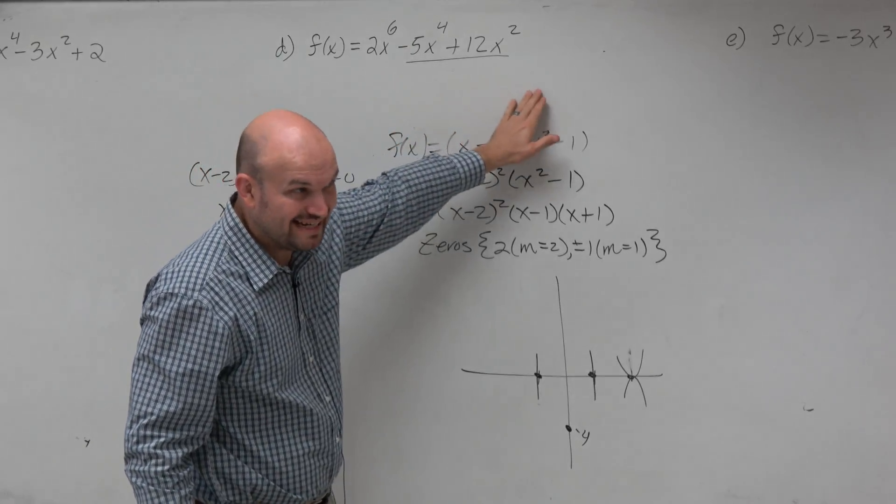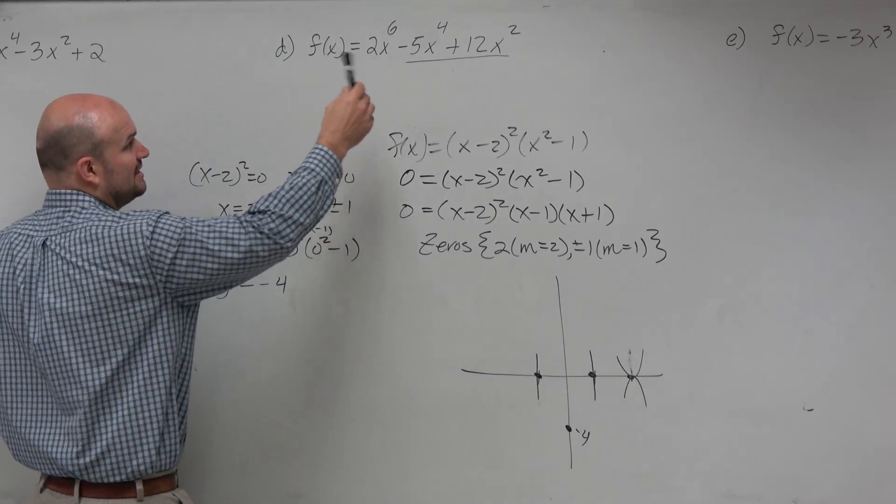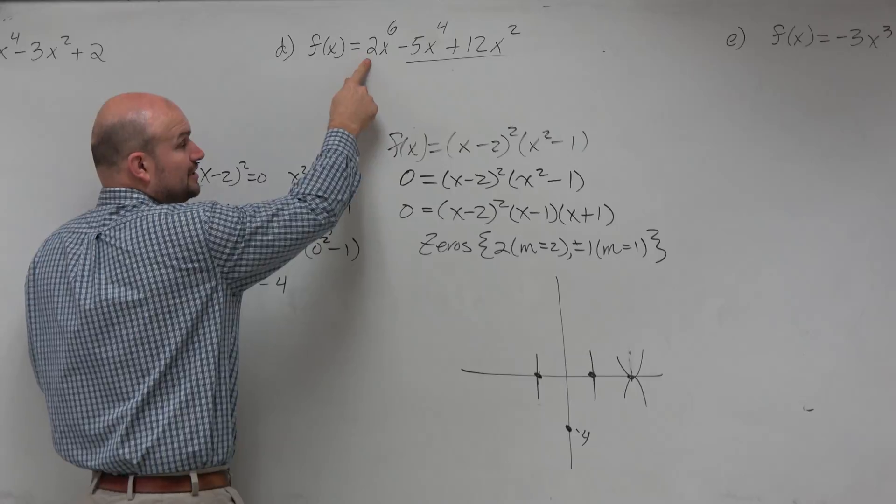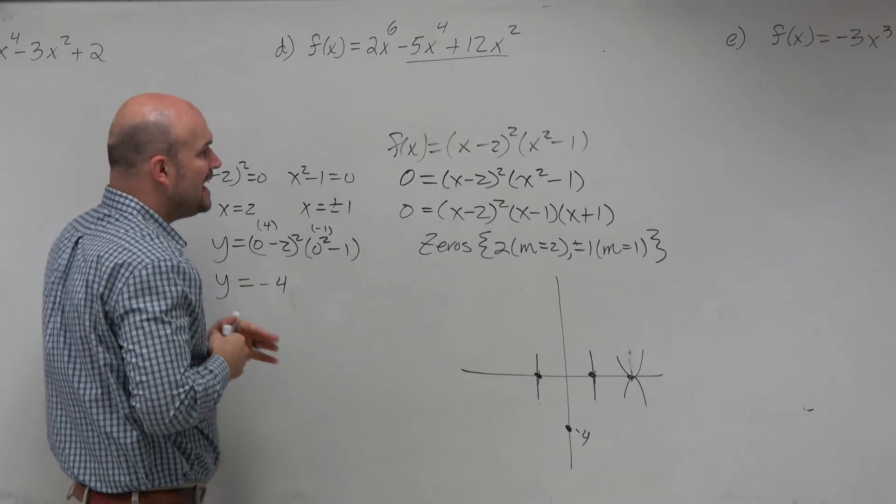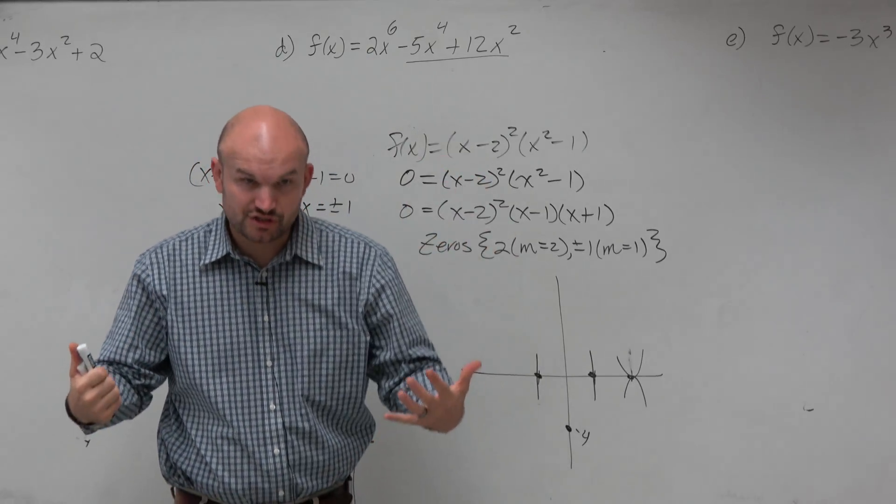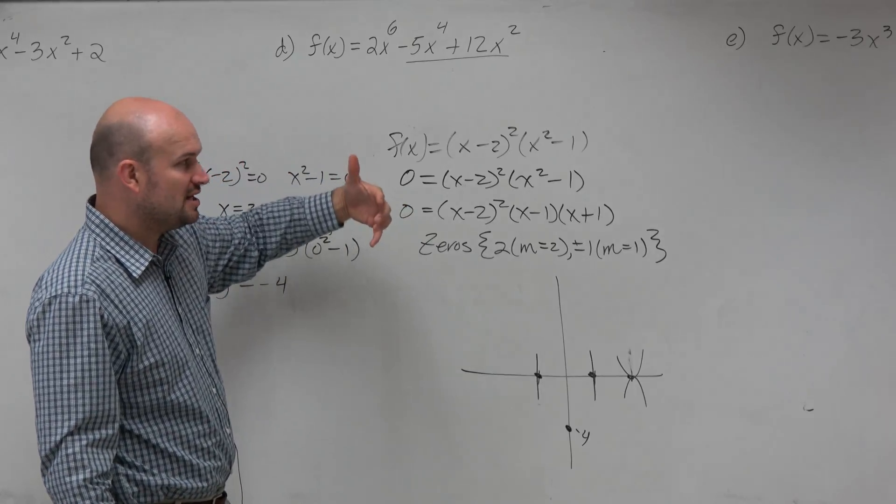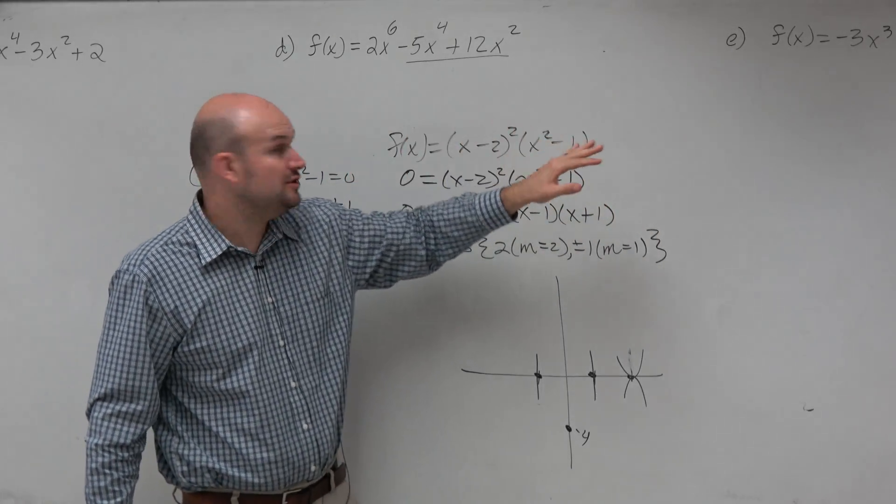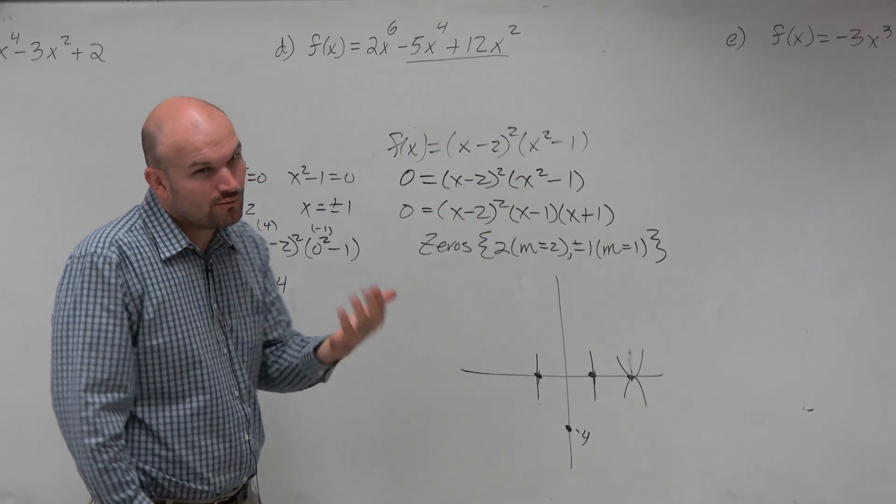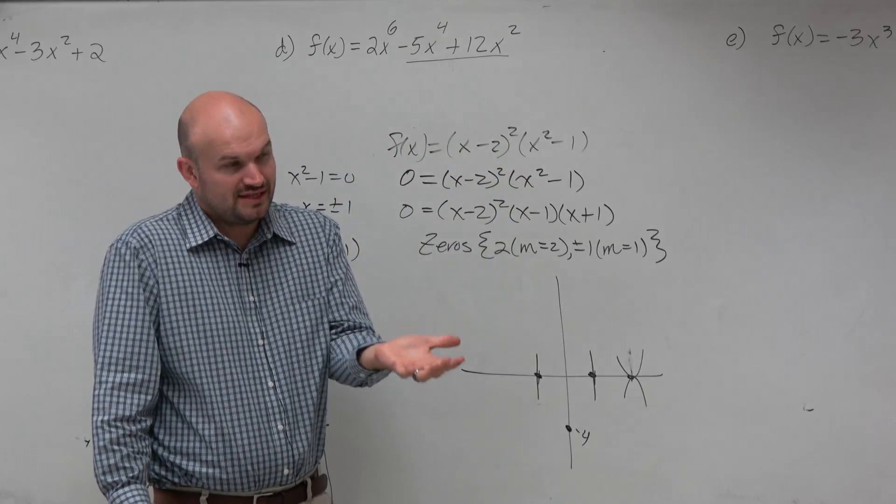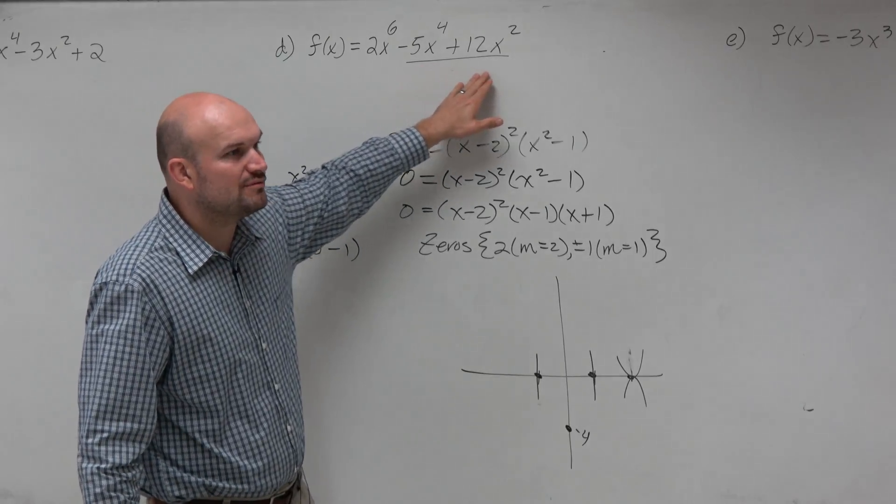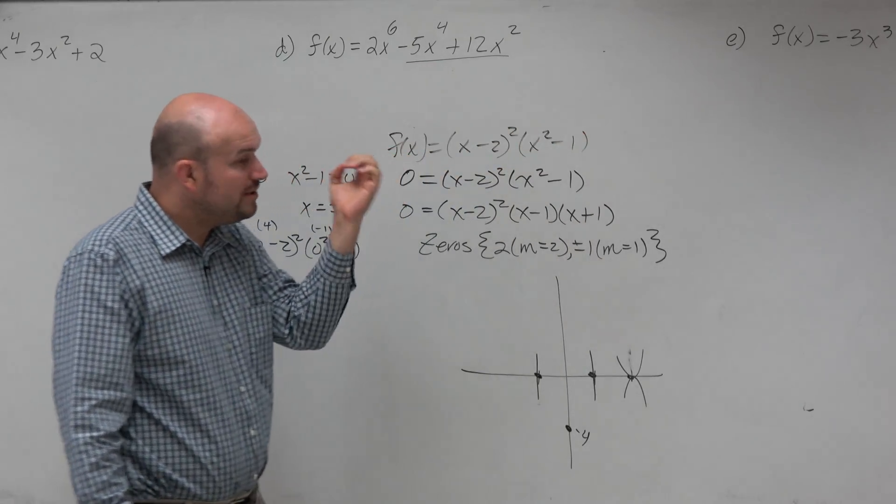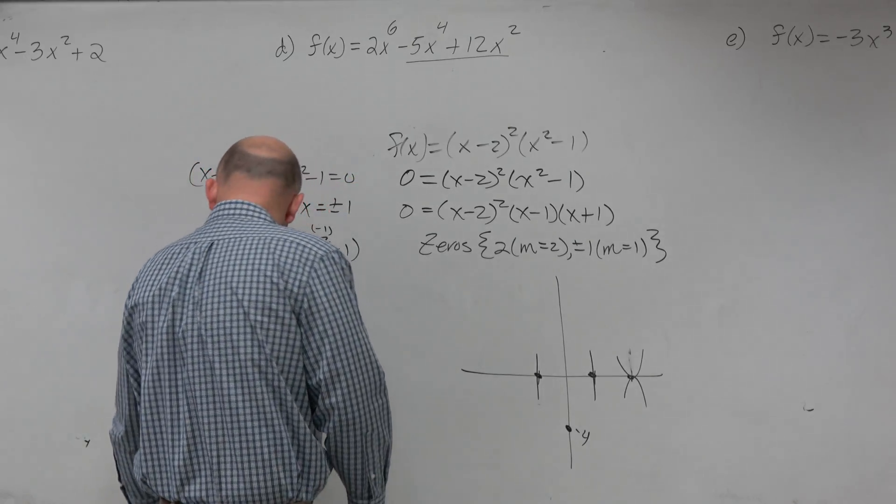So I don't need it. So the end behavior here, the degree is either even or odd, and the leading coefficient is positive or negative. Now, could you just multiply this out? We talked about binomial expansion and multiplying. You guys could multiply this out. But hopefully, you guys understand, it's a waste of time to multiply that out for the end behavior, because we don't need the rest of that stuff. It doesn't affect the end behavior.